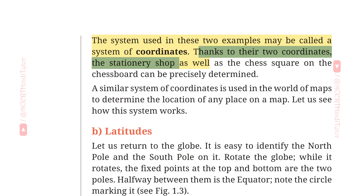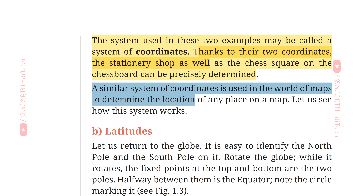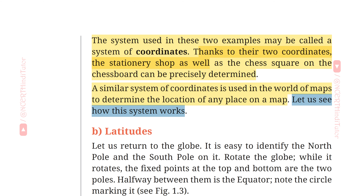Thanks to their two coordinates, the stationary shop as well as the chess square on the chess board can be precisely determined. इनके दो निर्देशांकों की वजह से स्थान सटीक रूप से निर्धारित किया जा सकता है। A similar system of coordinates is used in the world of maps to determine the location of any place. Let us see how this system works.